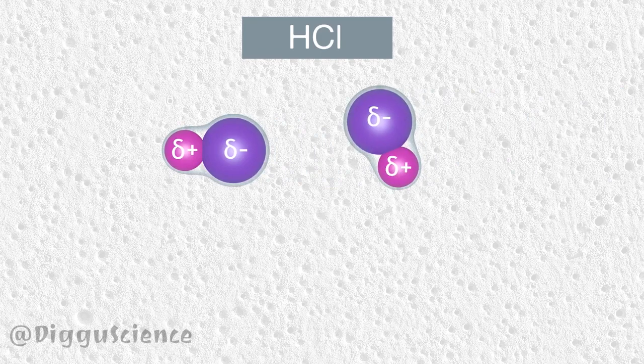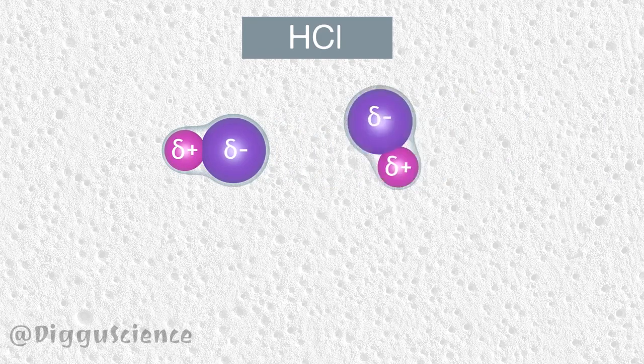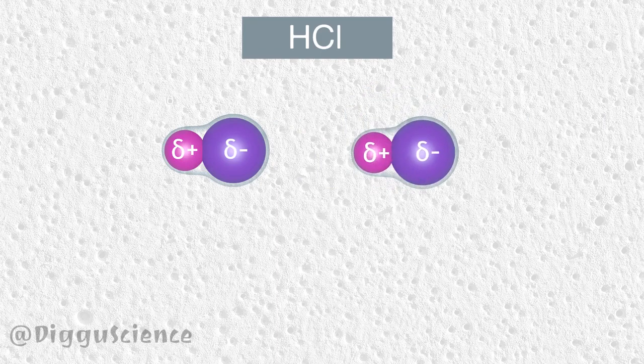When next to the HCl molecule there is another HCl molecule, the atom which has positive polarity will face the atom which has negative polarity, because positive charges and negative charges attract each other. We can depict this force as a dotted line. This is what is referred to as dipole-dipole forces, or KISOM forces.